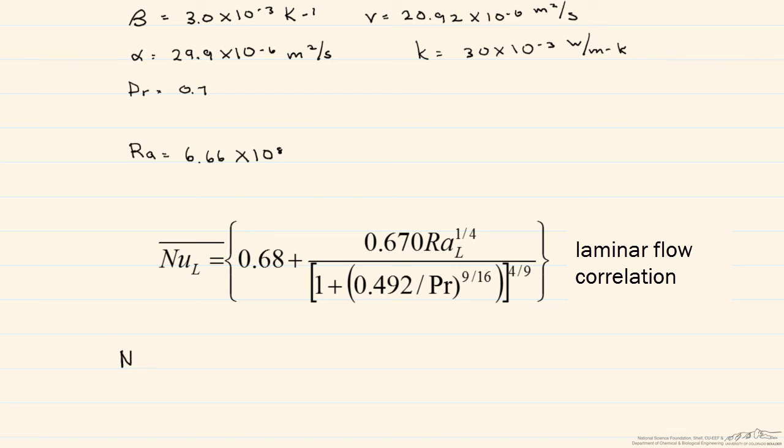When we put our values into the Nusselt number correlation, we get Nu = 83. From there we calculate h, which is 83 times k divided by L. For vertical plates, the length scale is the height of the plate, so L = 0.6 meters.